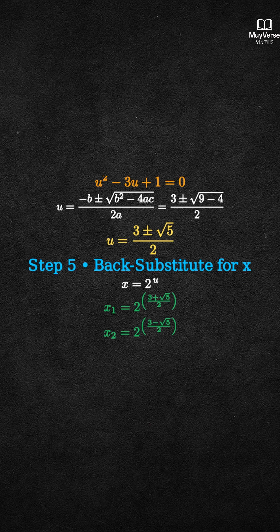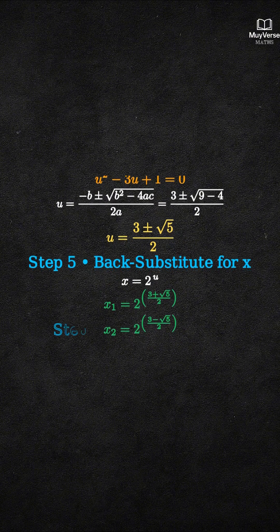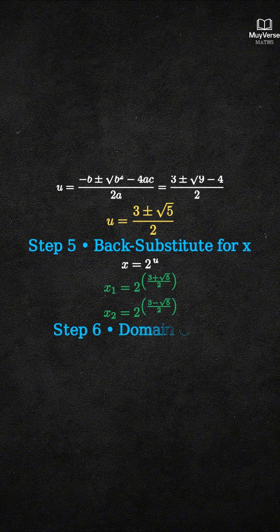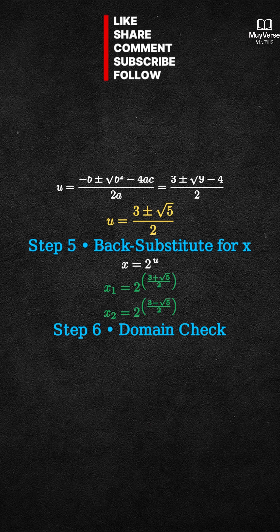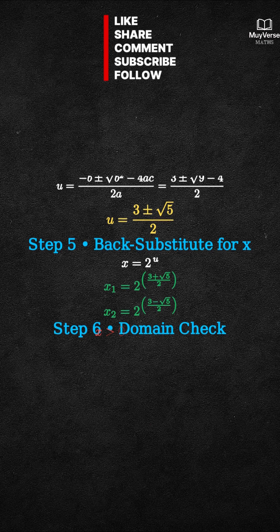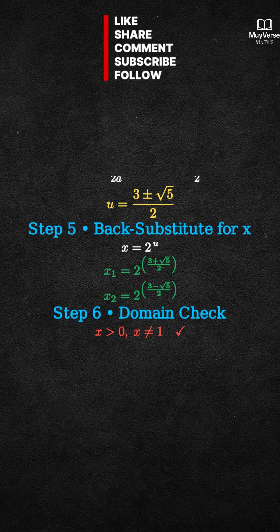Step 6: domain check. For both logs to exist, x must be positive and not equal to 1. Our two values are positive powers of 2, so both are valid and neither equals 1.